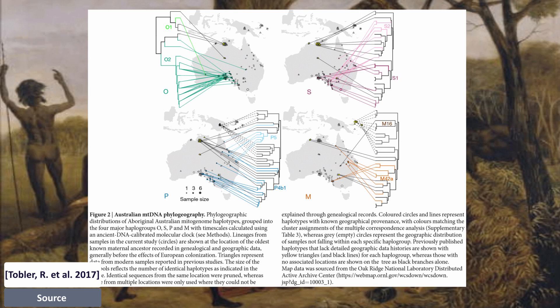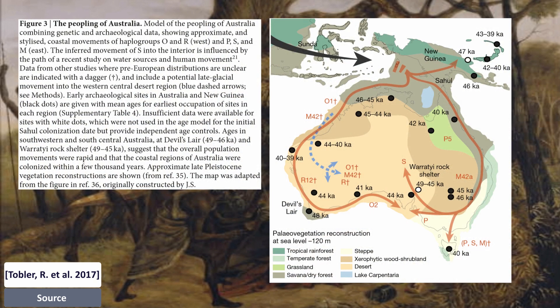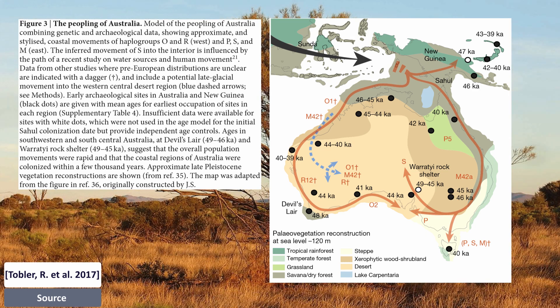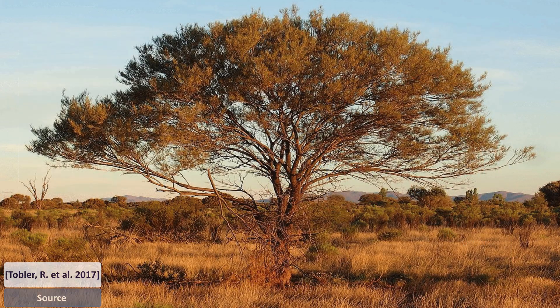Ranging was anchored in localized, collective and stable land-language ownership units, and occurred within a broad environmental region. This form of subsistence and territoriality might also explain the notable lack of exchange between New Guinea and Australian mitochondrial lineages, despite a land bridge between the two until about 9,000 years ago.